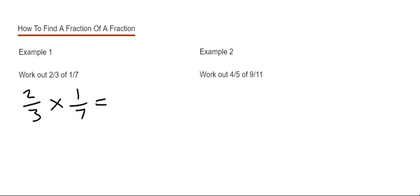And then you can just multiply the numerators together. So two times one is two, and multiply the denominators together. Seven times three is twenty one.